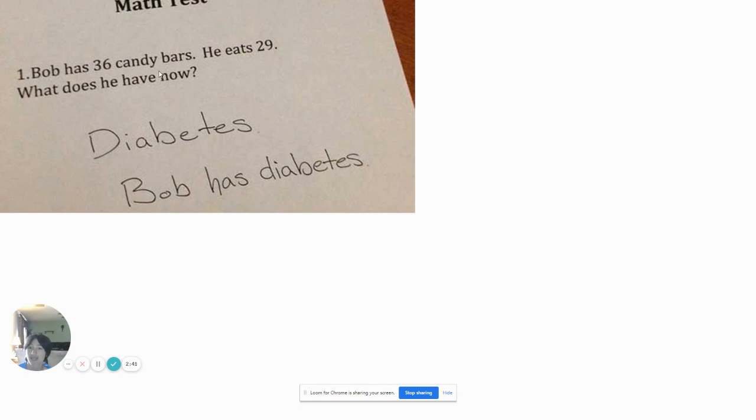Alright. Bob has 36 candy bars. He eats 29. What does he have now? Diabetes. Bob has diabetes. Alright, I know this one. 29, 30, 31, 32, 33, 34, 35, 36. He should have 7 candy bars left. But yes, he also has diabetes. Because he ate so much sugar. If you eat way too much sugar, you get diabetes.